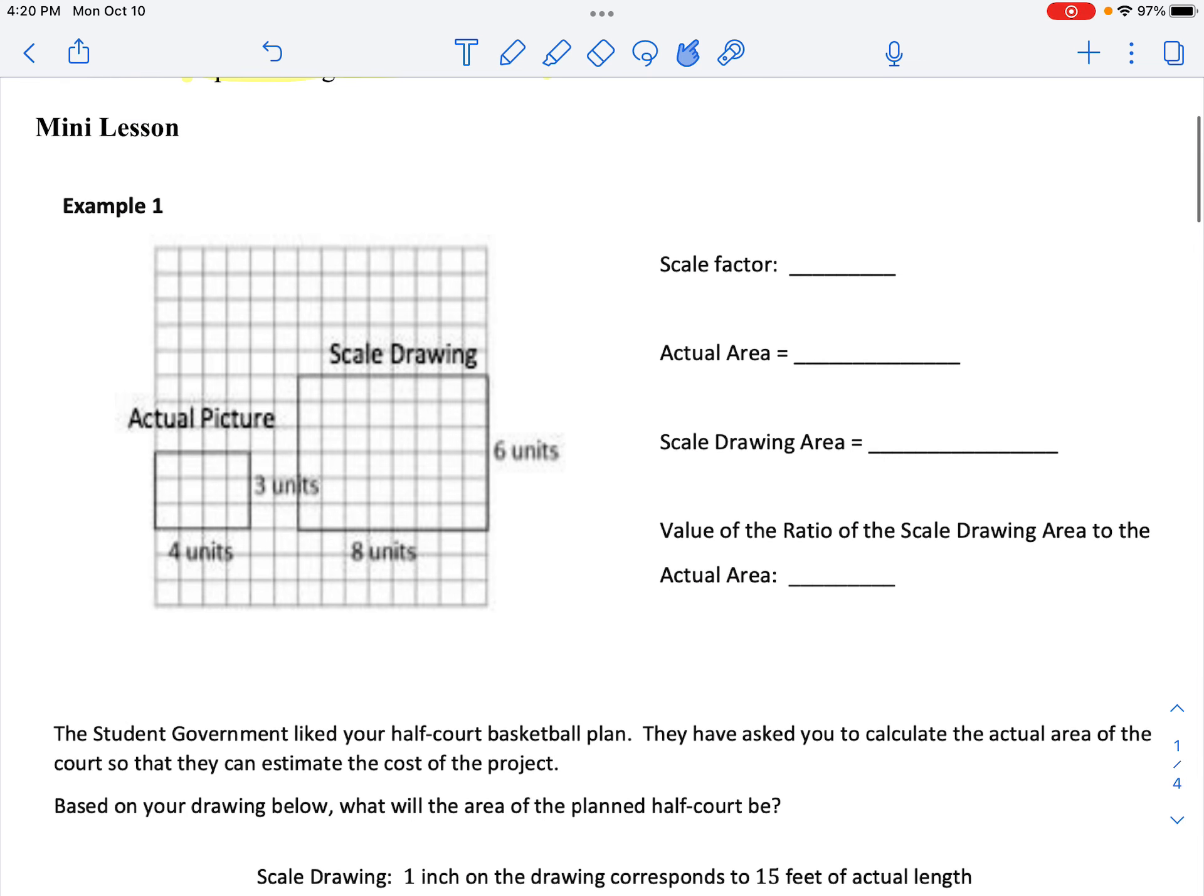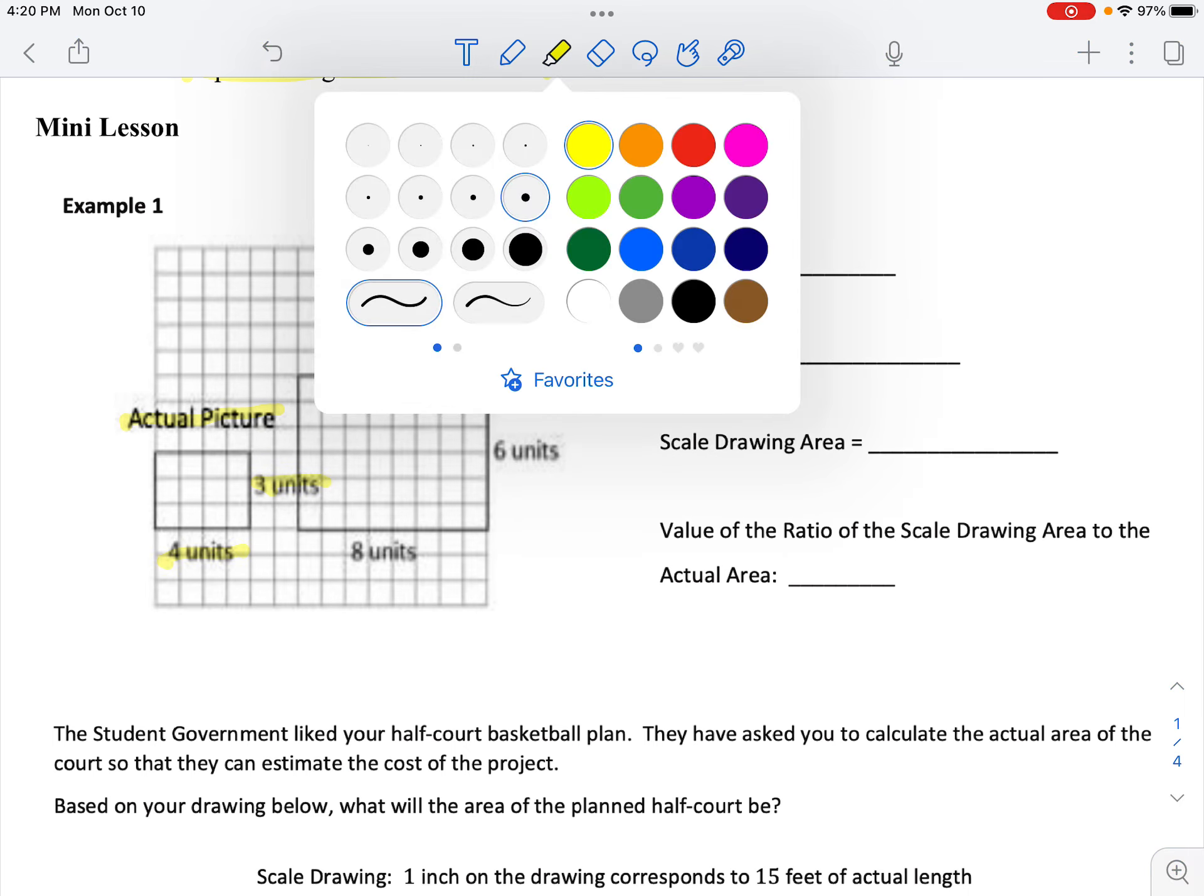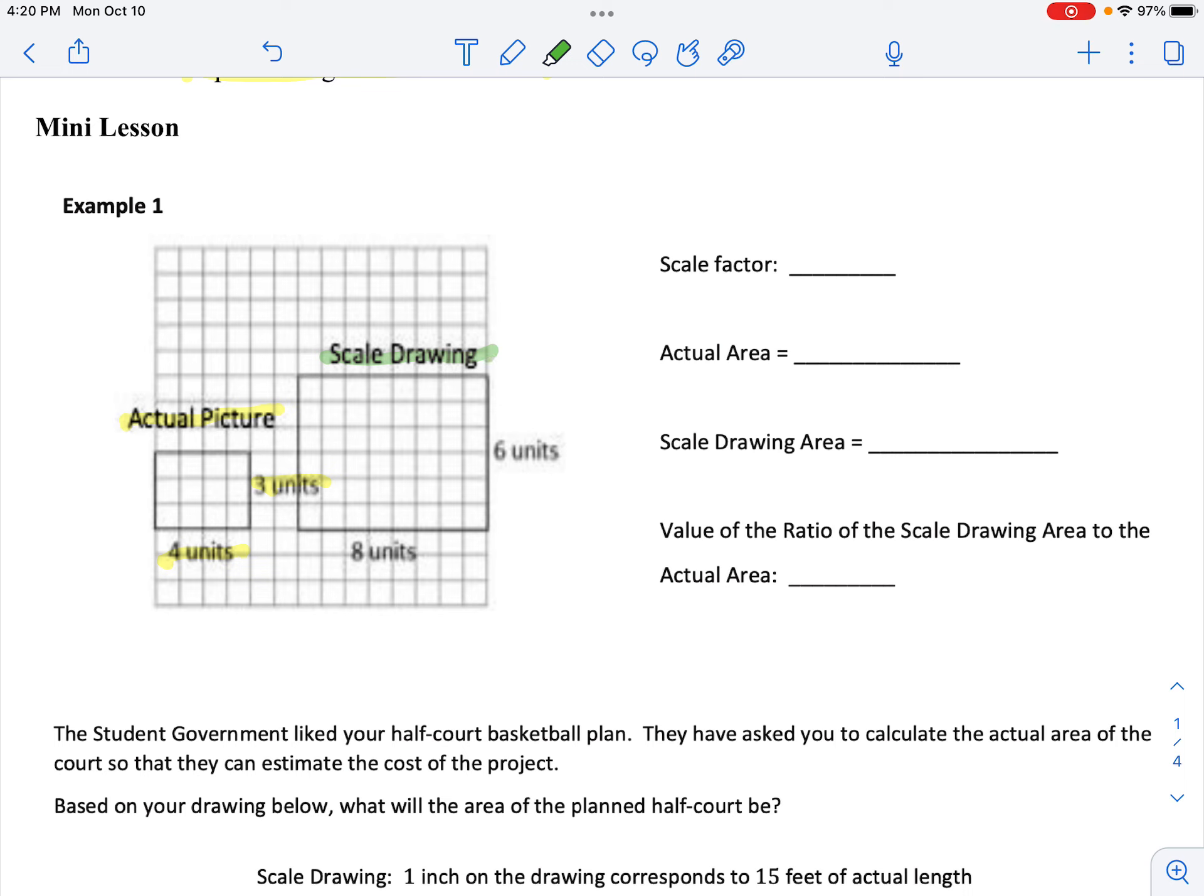Example number one. We have the actual picture and the scale drawing. Actual is 4 units by 3 units. The scale drawing is, let's make these different colors. Actual. Scale Drawing.